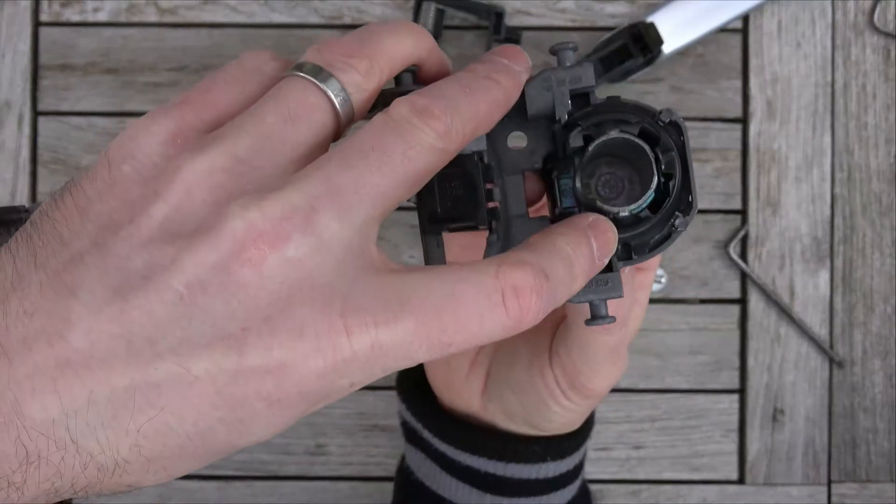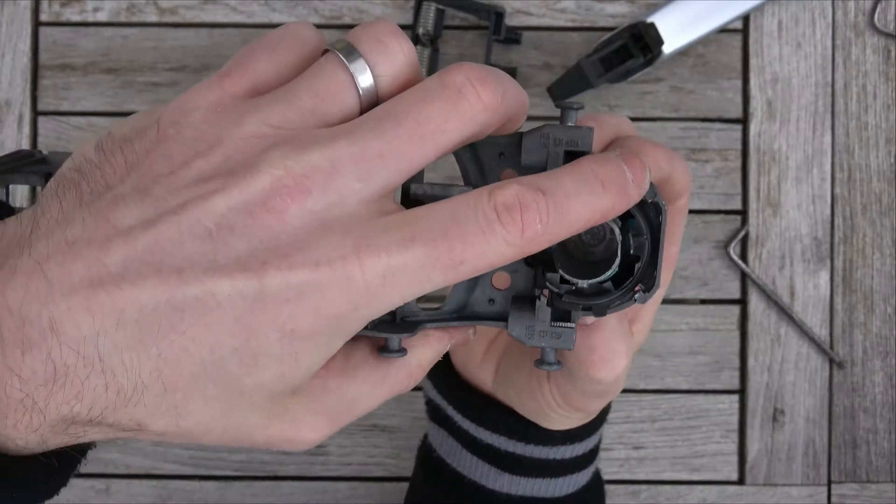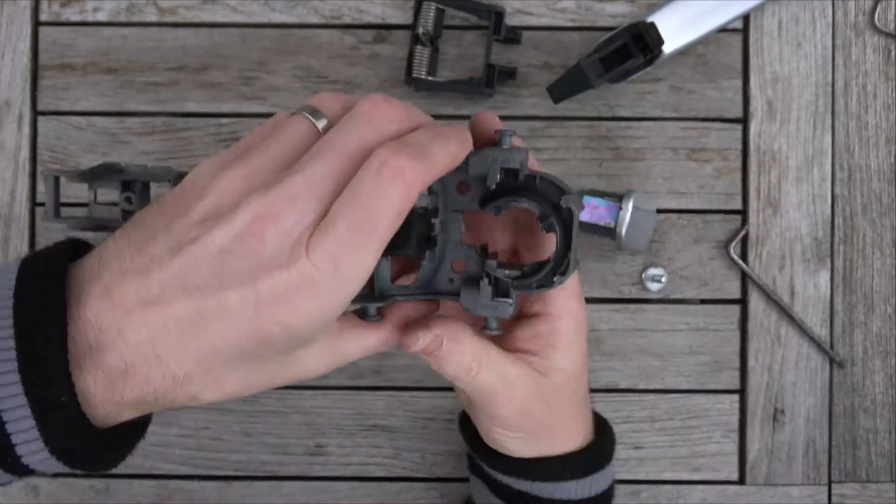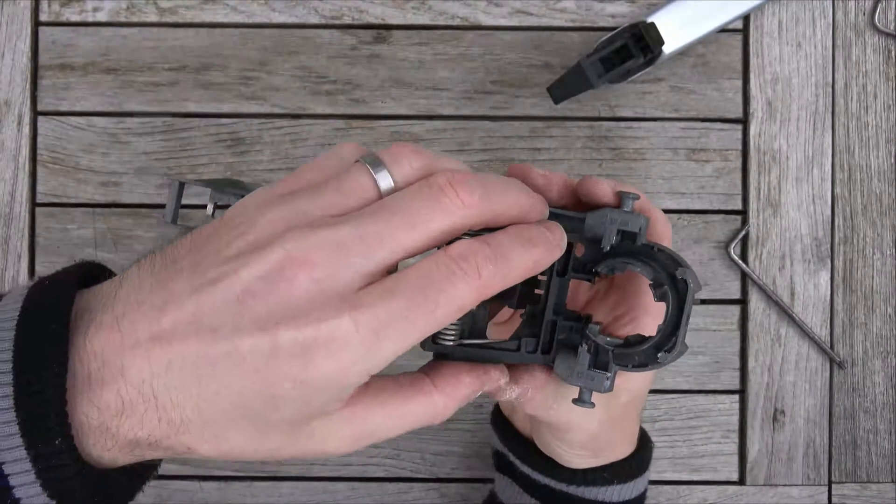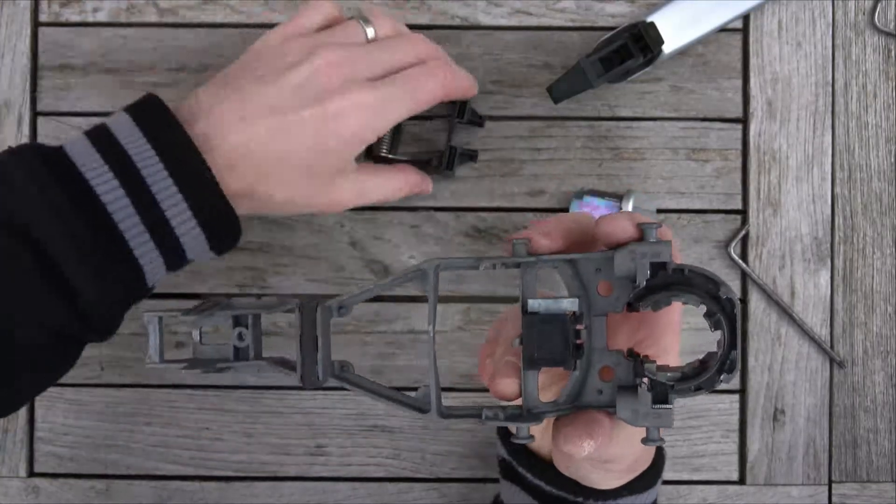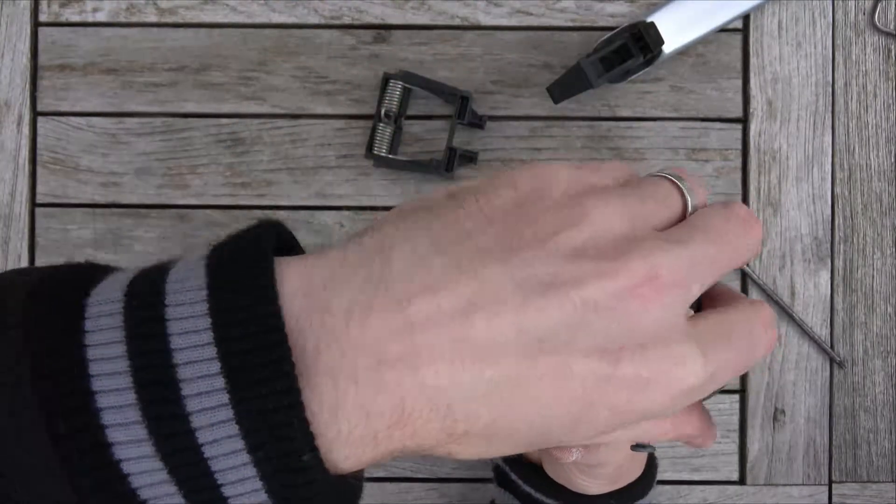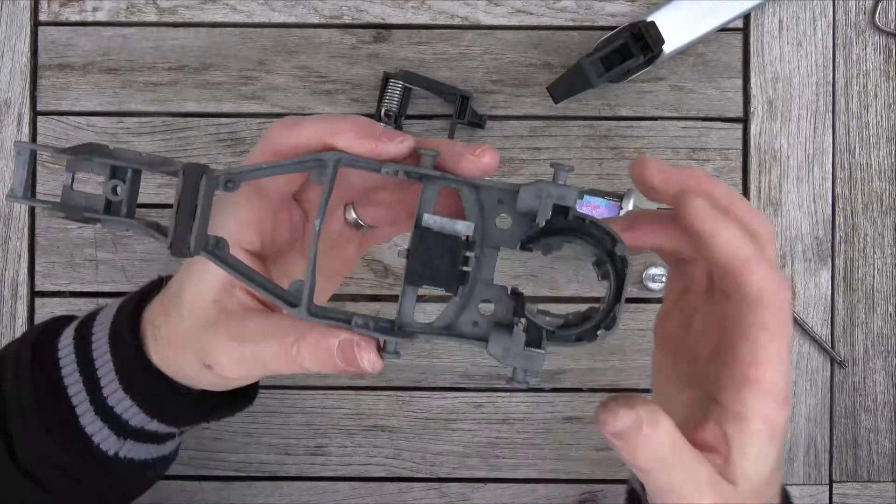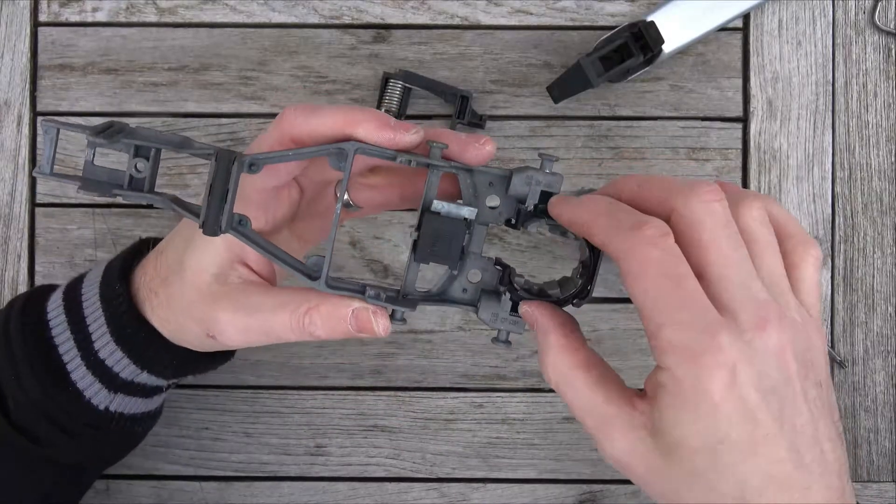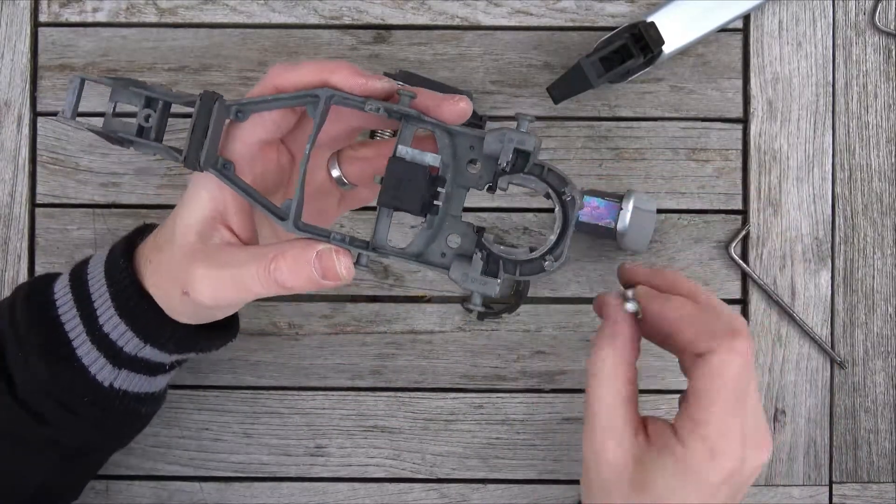Also, when it comes to this spring-loaded bit here, this will also be locked into place on this corner by the corner of this one here. So that's how it goes there, but unfortunately we can't put that in just yet. We have to put the screw in first.